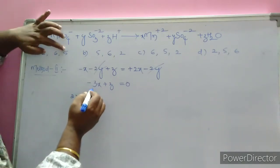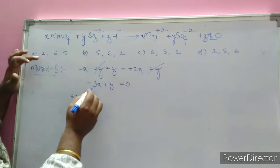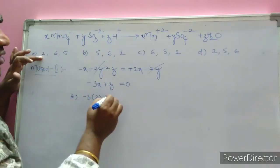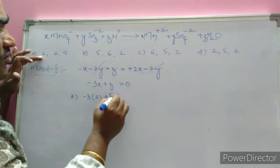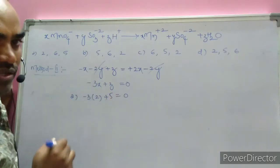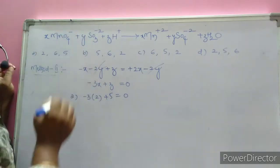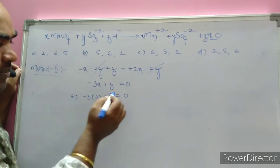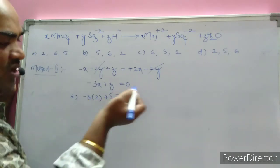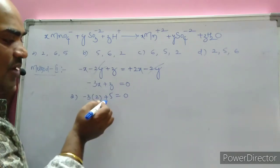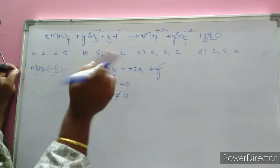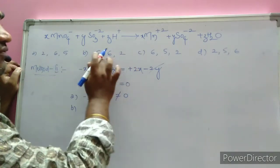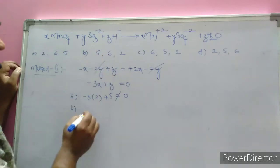Checking the first option: x=2, z=? Substituting: minus 3 times 2 plus 5 equals minus 6 plus 5 equals minus 1, which is not equal to zero — so it is not the right answer. Checking the second option (5, 6, 2): minus 3 times 5 plus 2 equals minus 15 plus 2, also not equal to zero.